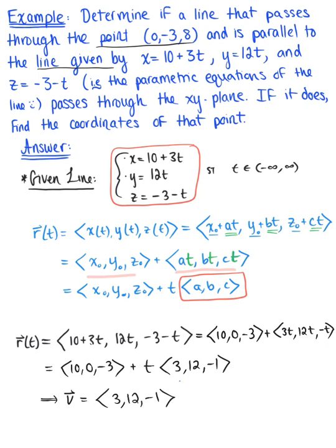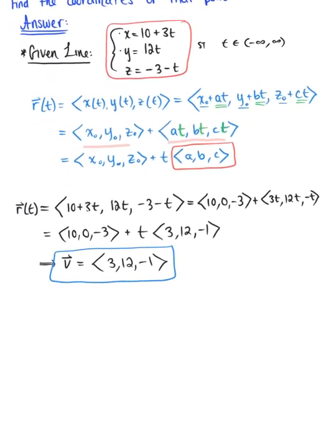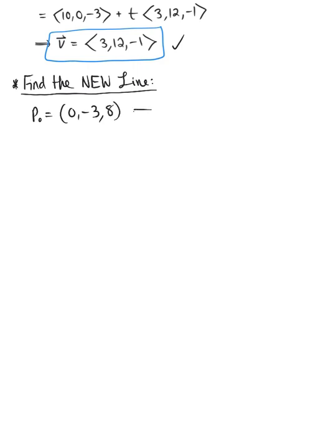We can now use this parallel vector to find a new line that passes through the point (0, -3, 8) and is parallel to the given line. That point P₀ = (0, -3, 8) gives us our position vector R₀ — the directed line segment from the origin to P₀ — so R₀ = (0, -3, 8).